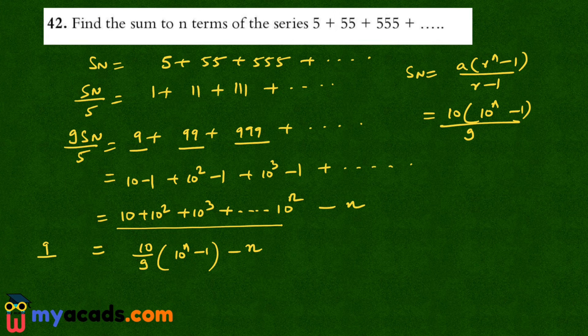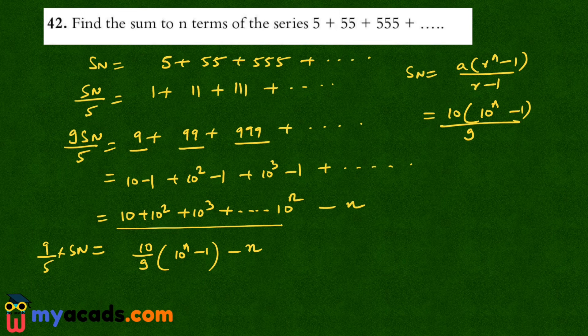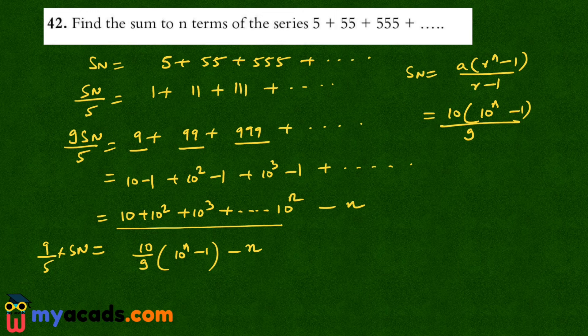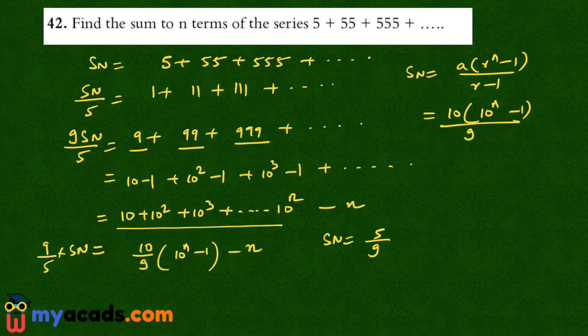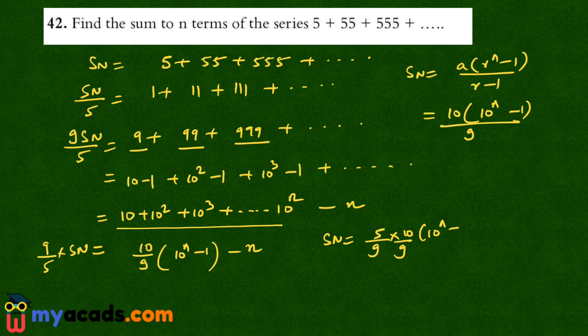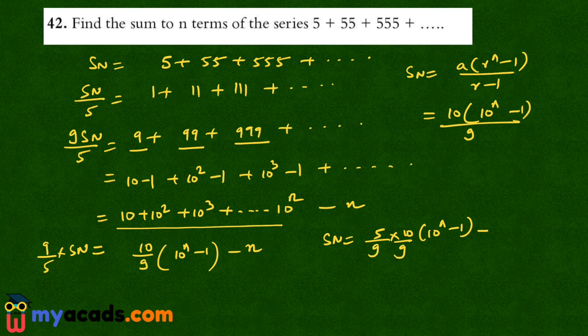So 9 by 5 Sn is this. Now I will multiply both sides by 5 by 9. So Sn will become 5 by 9 into 10 by 9 into 10 raised to the power n minus 1 minus 5 by 9 n.